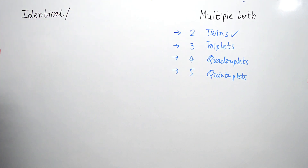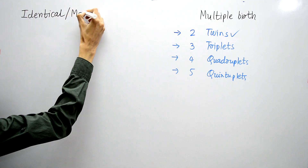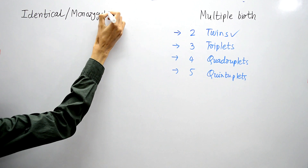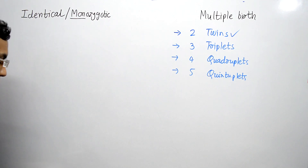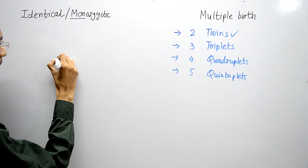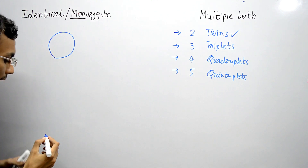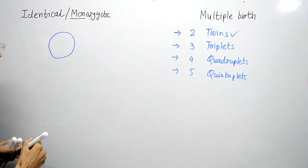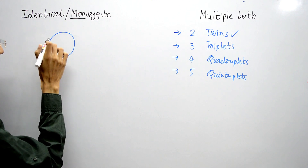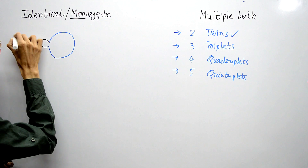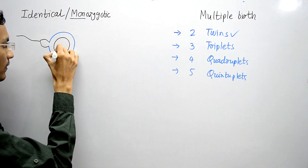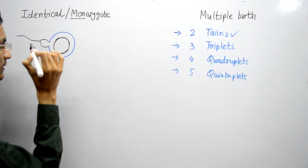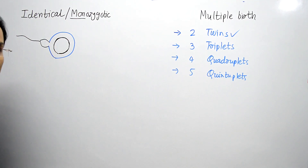Identical twins are also known as monozygotic twins. The word monozygotic itself suggests that they develop from a single zygote. In this case, when an ovum is fertilized by a sperm, a zygote is developed, and then cleavage of the zygote begins.